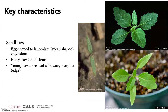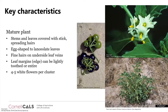At the seedling stage, hairy nightshade typically has egg-shaped to lanceolate — spear-shaped — cotyledons. It has hairy leaves and stems, and the young leaves are often oval with wavy or toothed leaf margins. As a mature plant, it continues being hairy, with sticky spreading hairs on stems and leaves. The leaves continue to be egg-shaped to lanceolate with fine hairs on the underside of the leaf veins. The leaf margins tend to be lightly toothed or entire, with four to five white flowers per flower cluster.